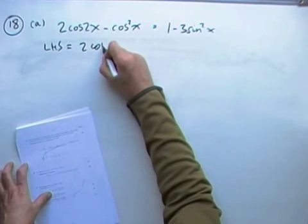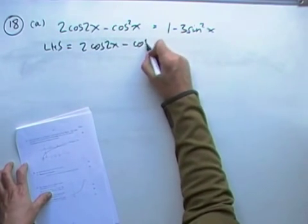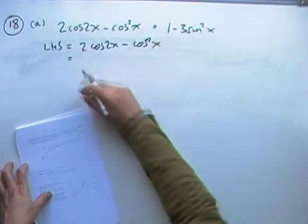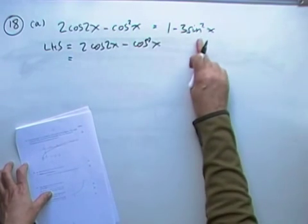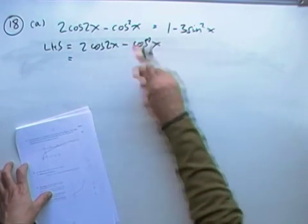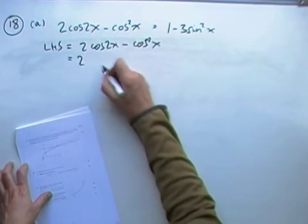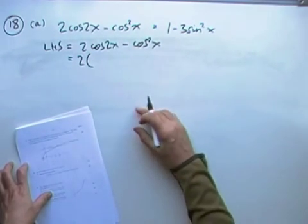So you take the left-hand side, which just now reads 2cos2x minus cos squared x. And then you have to figure, what would I need to do to make it look like this? Well, the first thing you notice, I don't want any cos's, so I'm going to have to do some changing. Well, there's a formula for cos2x.